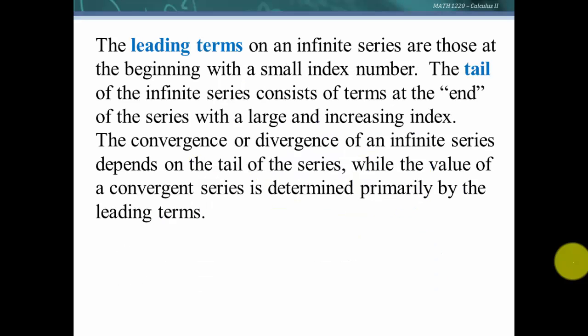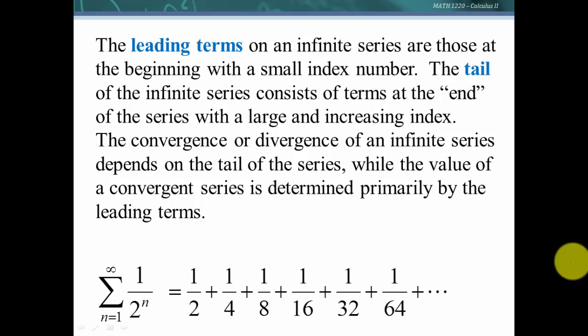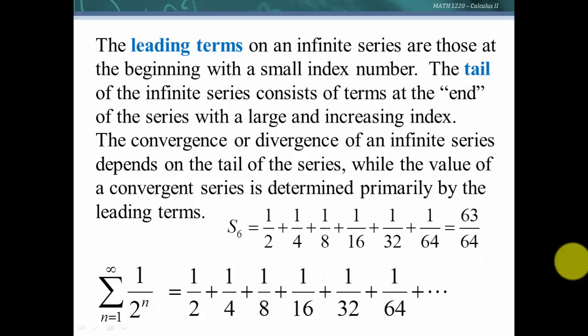The leading terms of an infinite series are those at the beginning with small index numbers; the tail consists of terms at the end with large, increasing index numbers as we go toward infinity. The convergence or divergence of an infinite series depends on the tail — what's happening at the end — while the value of a convergent series primarily depends on the leading terms. For example, if a series converges to one, after six terms we're already close to one; smaller and smaller terms add less and less, but it's the tail that determines convergence.